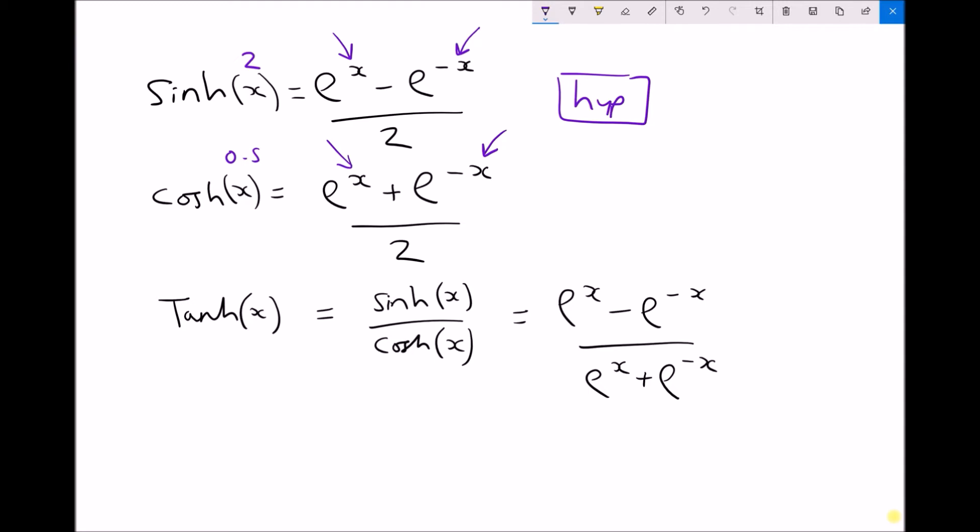Now finally, the hyperbolic tan, similar to our trigonometric functions, is hyperbolic sine over hyperbolic cos. And all we've done there is substitute the hyperbolic sine and the hyperbolic cos into the formula. And when we simplify it, that's what we get, e to the x minus e to the minus x over e to the x plus e to the minus x.